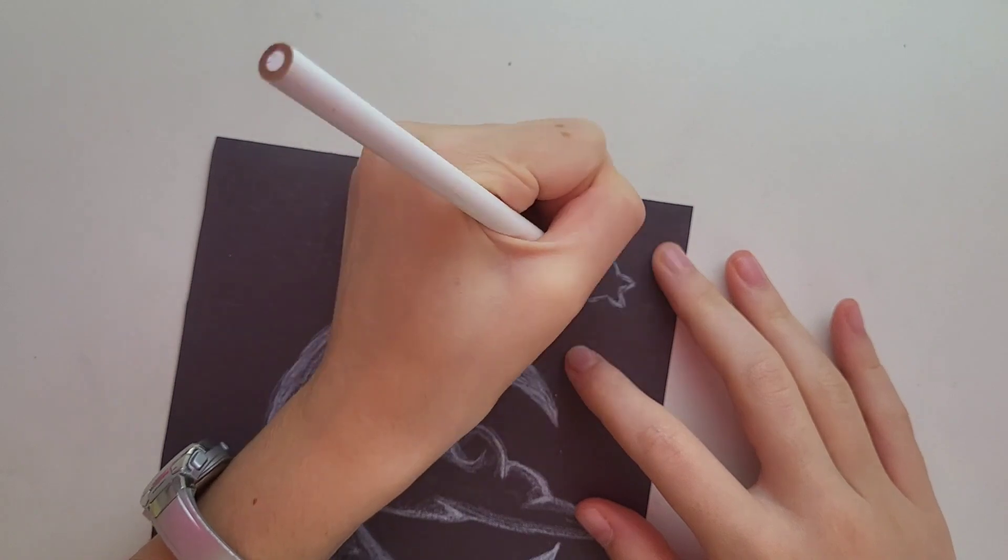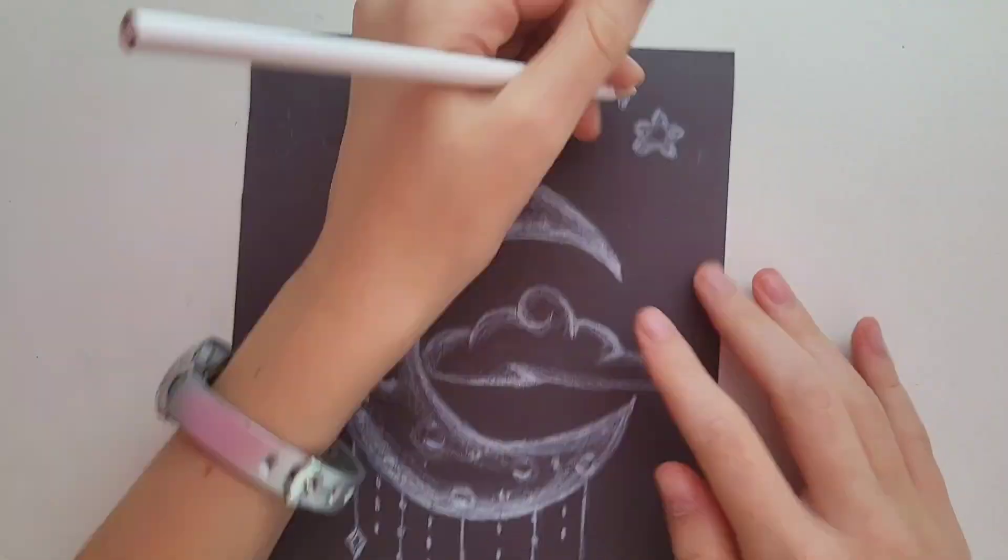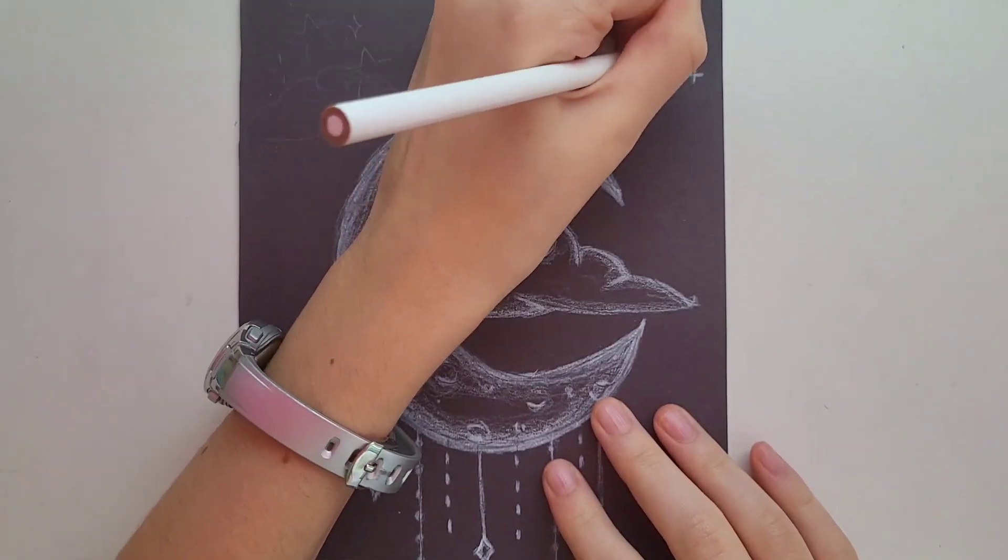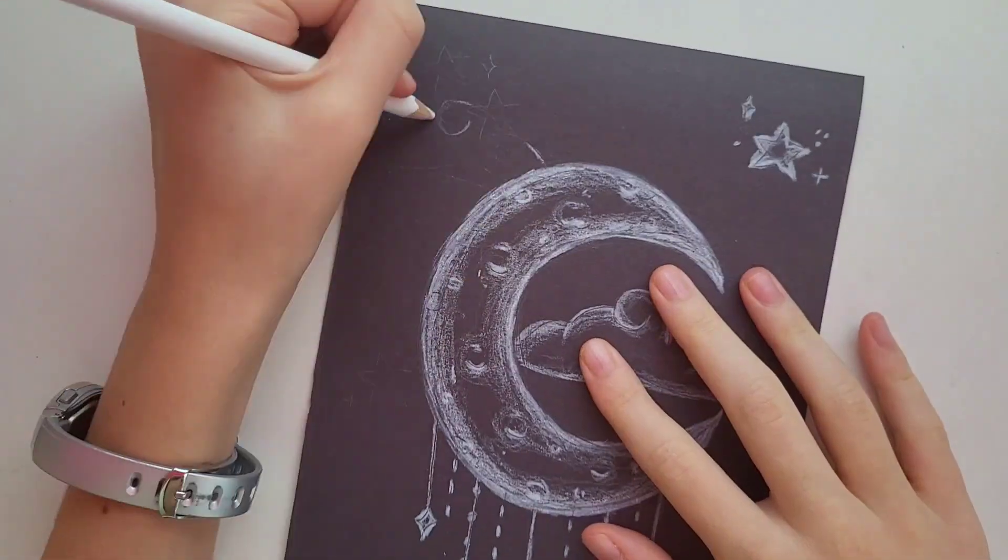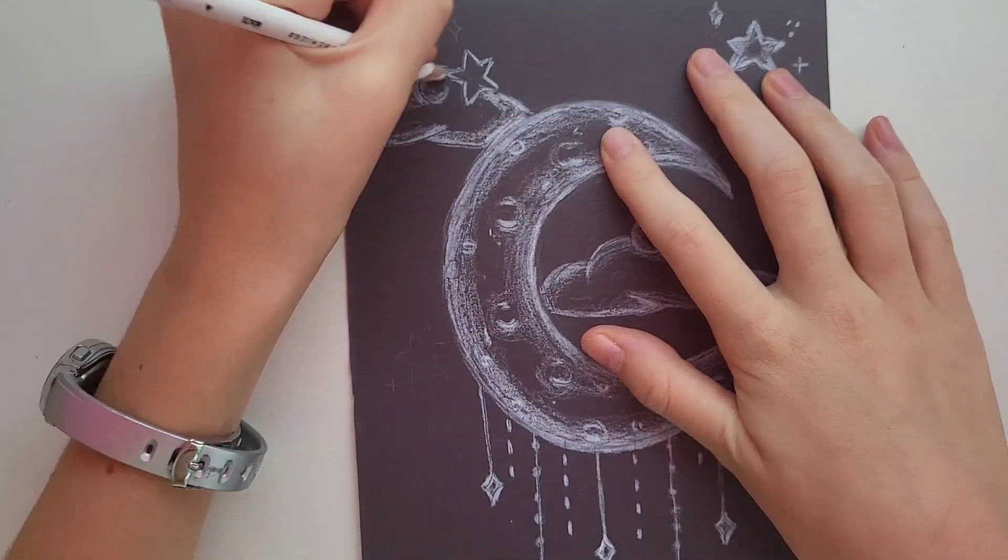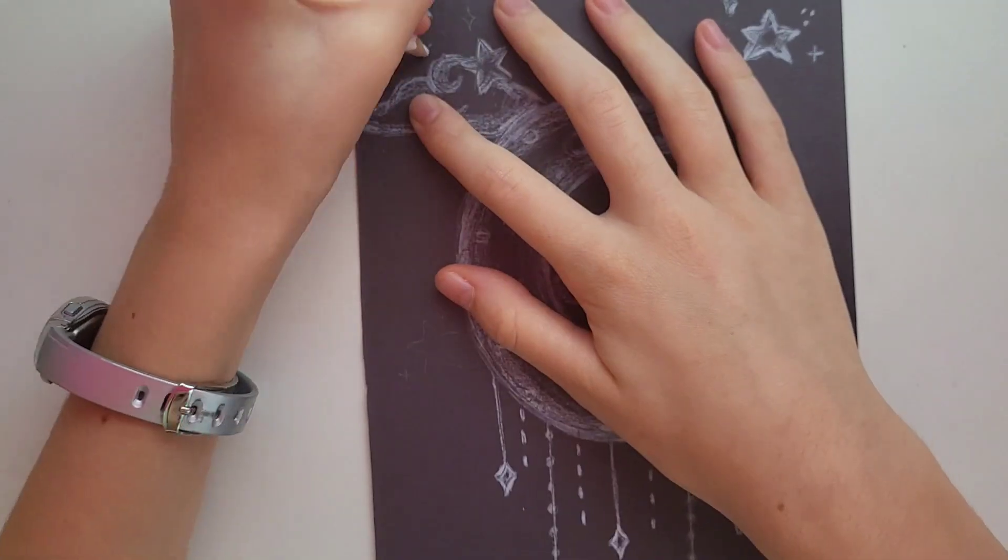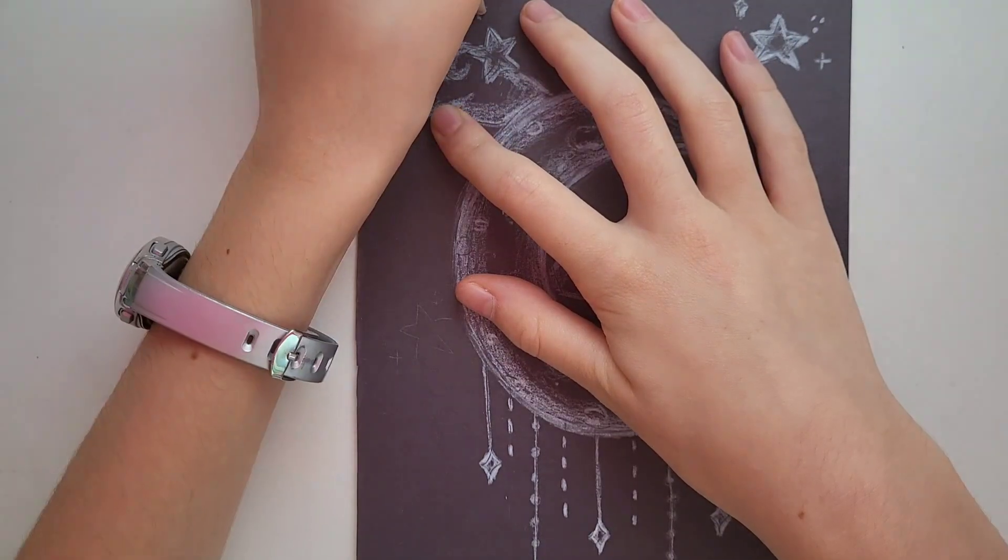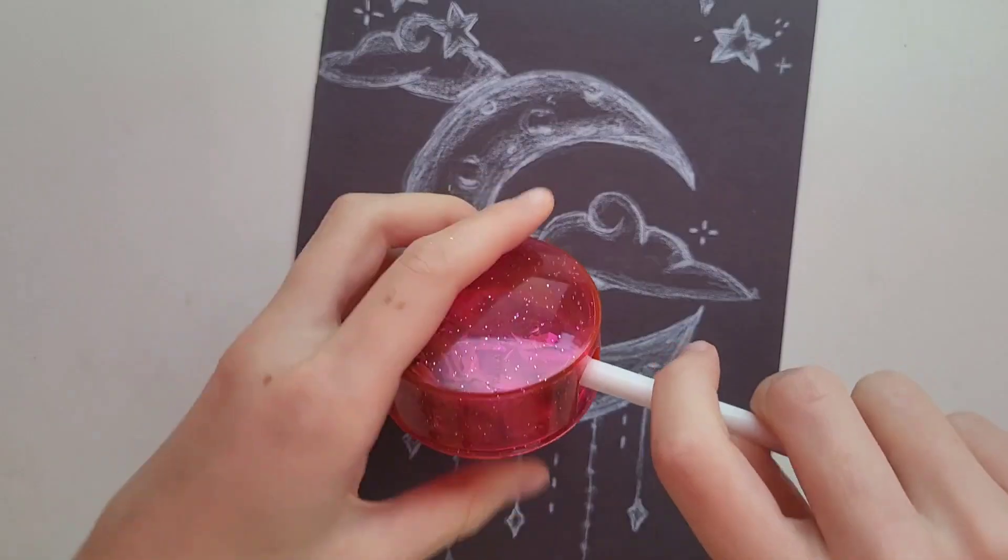Then it was time to move on to the rest of the sky. I did a cloud kind of right behind the moon and then I just worked on some stars. I added little bits around them just to make them look a bit more interesting and more magical. Yes, I'm aware that clouds and stars cannot be next to each other, but also have you ever seen a moon with strings attached to it? Just go with it.